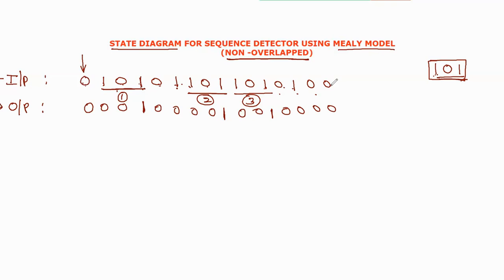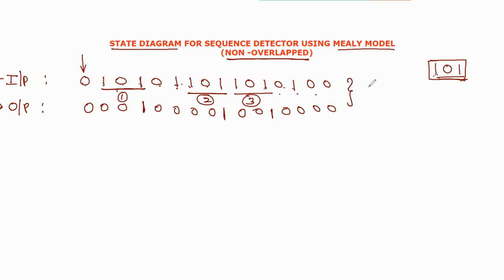If we have the sequence, we can find the sequence detection automatically. We have to use the input sequence. If you want to show the order of bits, you can show the order of bits. The sequence detection circuit is designed so that when we process the bits, we can generate the output. This is the sequence detection circuit.